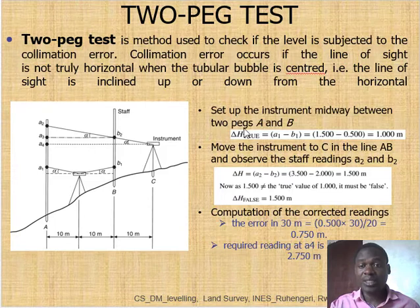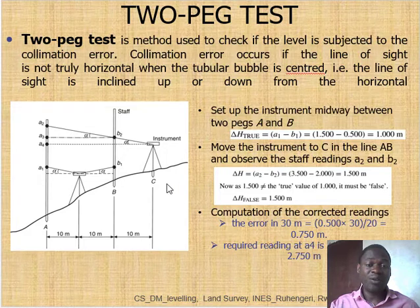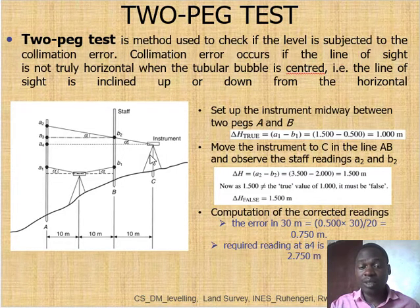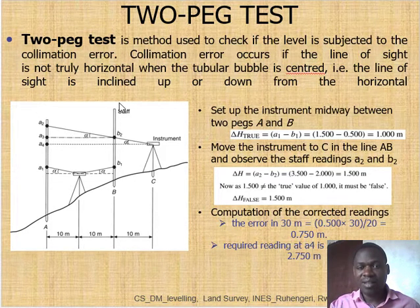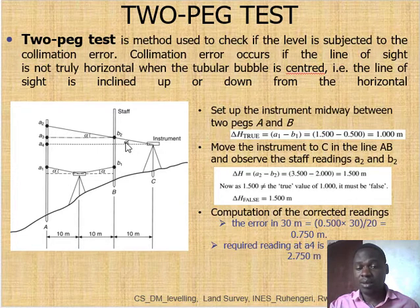We call it the true value because the error due to the collimation has been eliminated. You are then going to move the instrument along the line AB to point C, and you are going to take the same readings — reading A2 and reading B2 — which include the error due to the collimation.